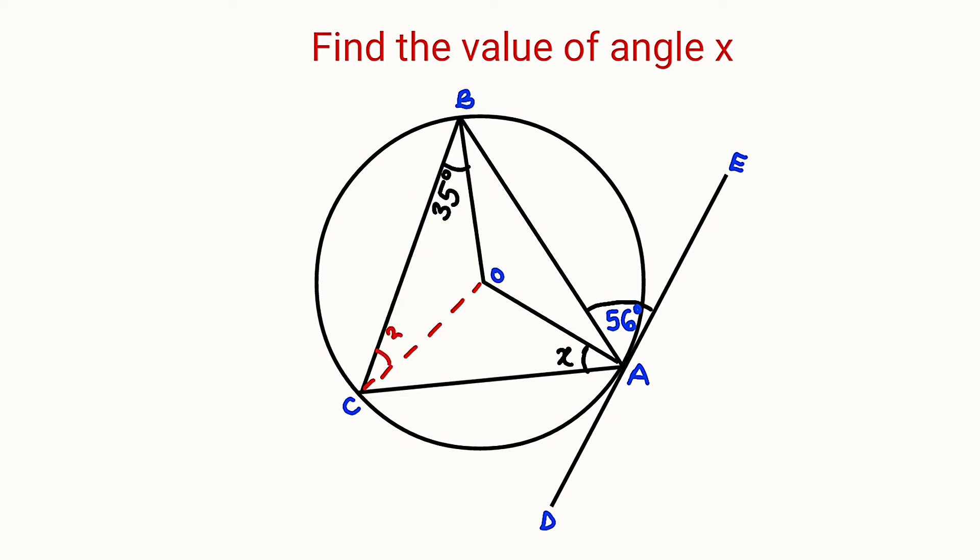this angle right here is 35 degrees. But don't forget that the whole of this angle is 56. So if it is 56, what will be the angle right here? It is going to be 56 minus 35, which is 21. Now you can see that 21 plus 35 is 56.